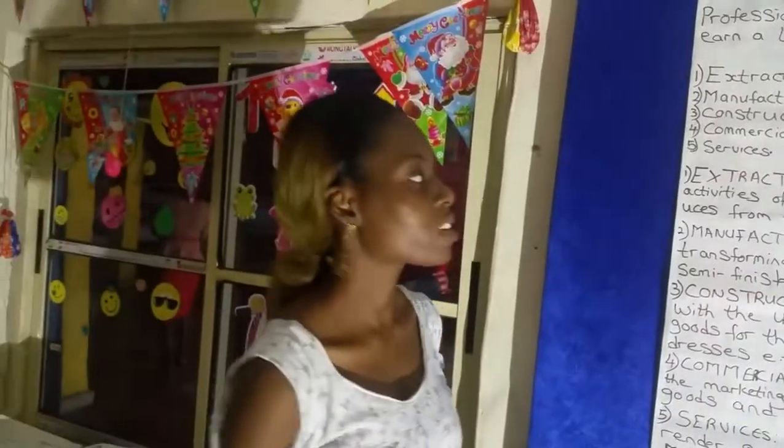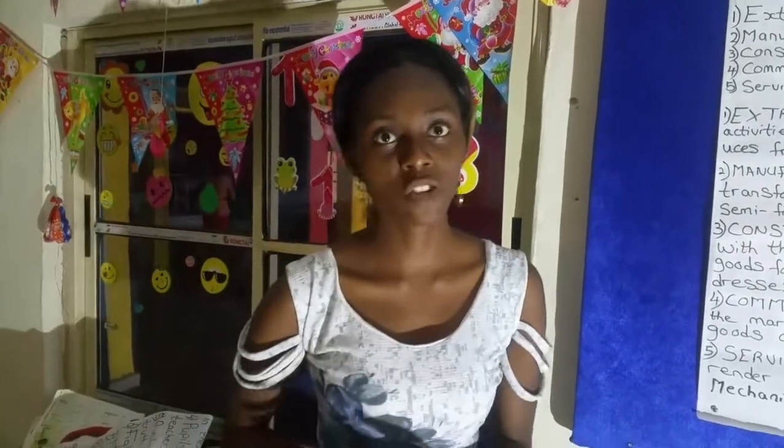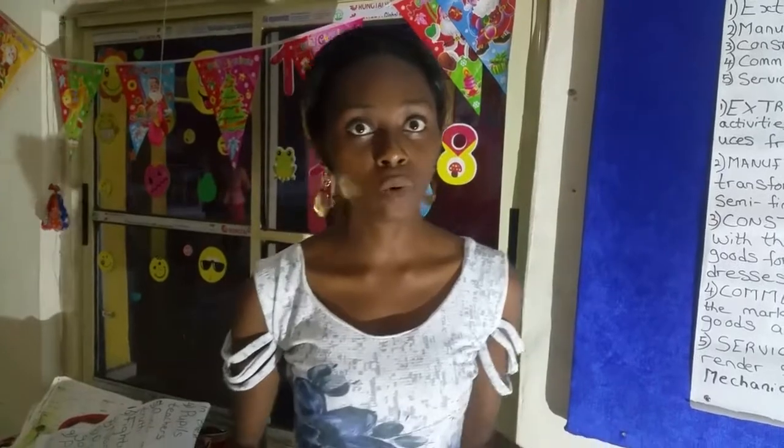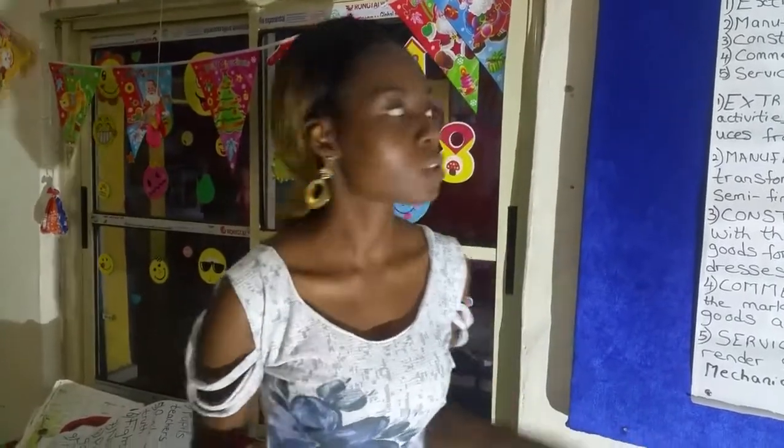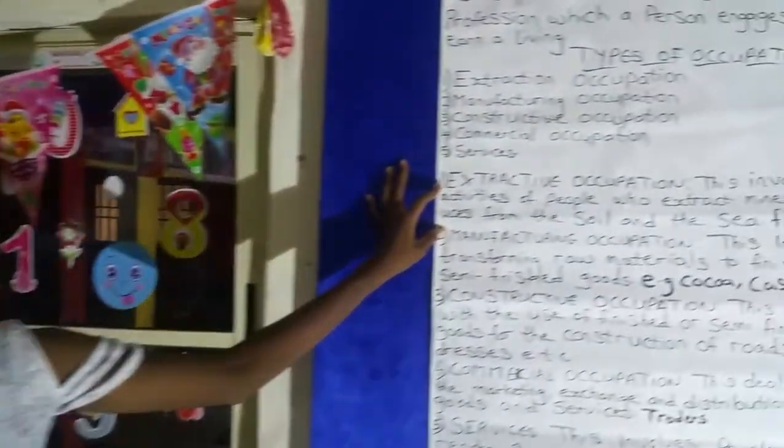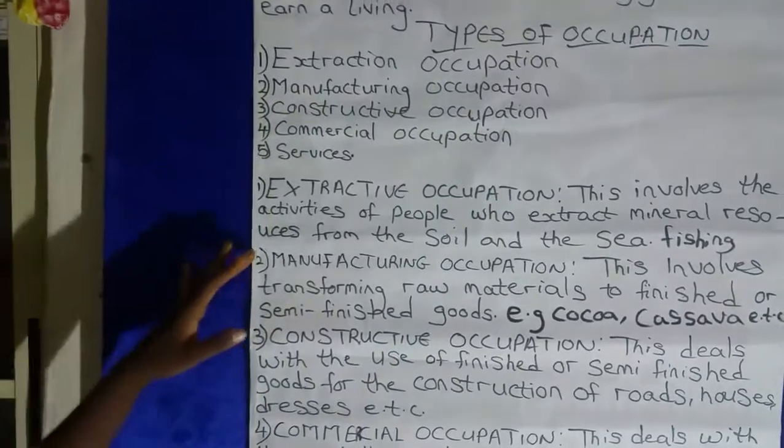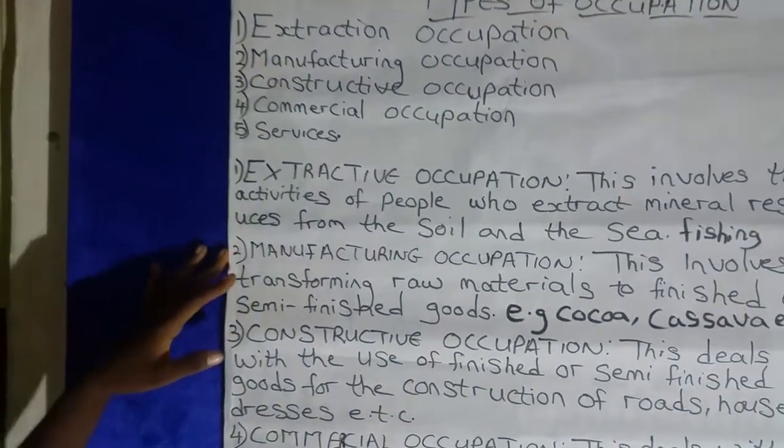Now I'll go ahead and explain the first one: extractive occupation. This involves extracting things from the soil or the sea. For example, fishing and the extraction of crude oil, even mining of gold. All of these fall under extractive occupation.